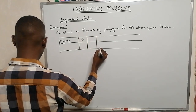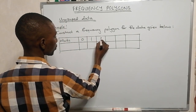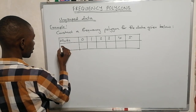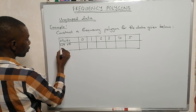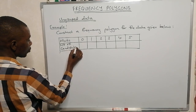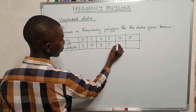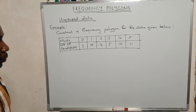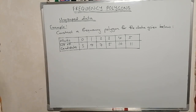The marks (x) go from zero up to five: 0, 1, 2, 3, 4, and 5. The number of candidates, which is the frequency, is: 3, 4, 7, 5, 10, and 11. We want to construct a frequency polygon from this given data — we just plot the points and then construct the polygon.